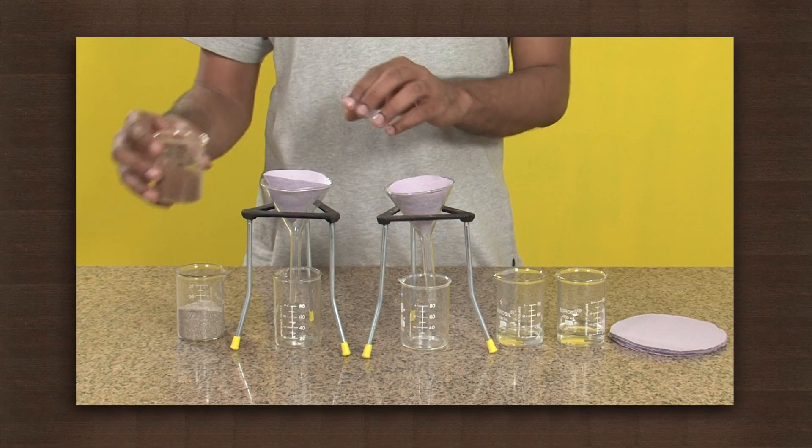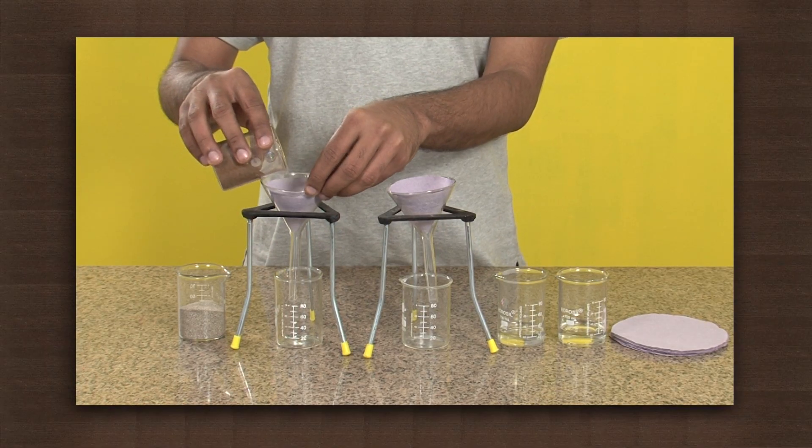Now put equal quantities of the loamy soil and the sand in the funnels such that the filter paper is covered.